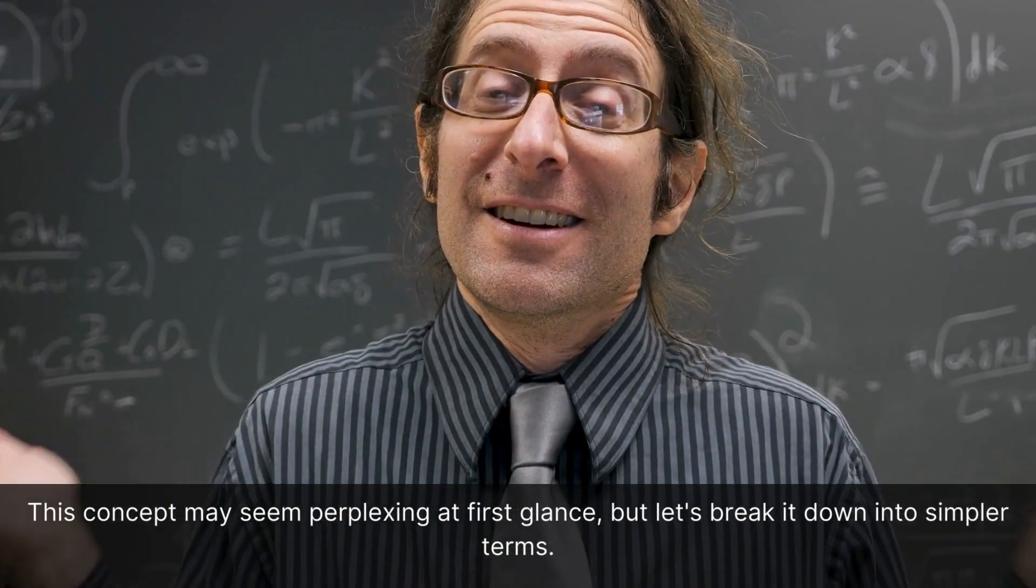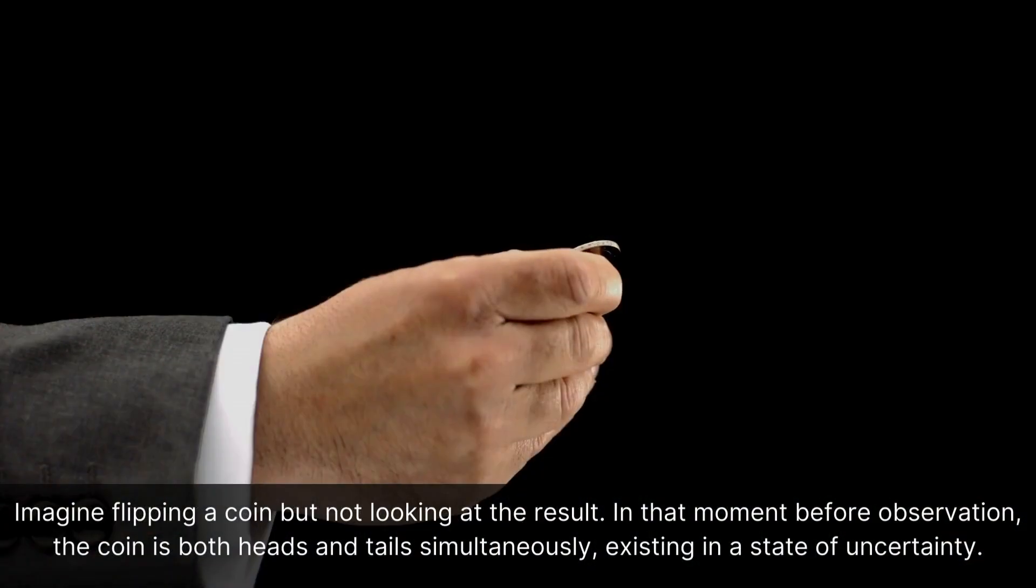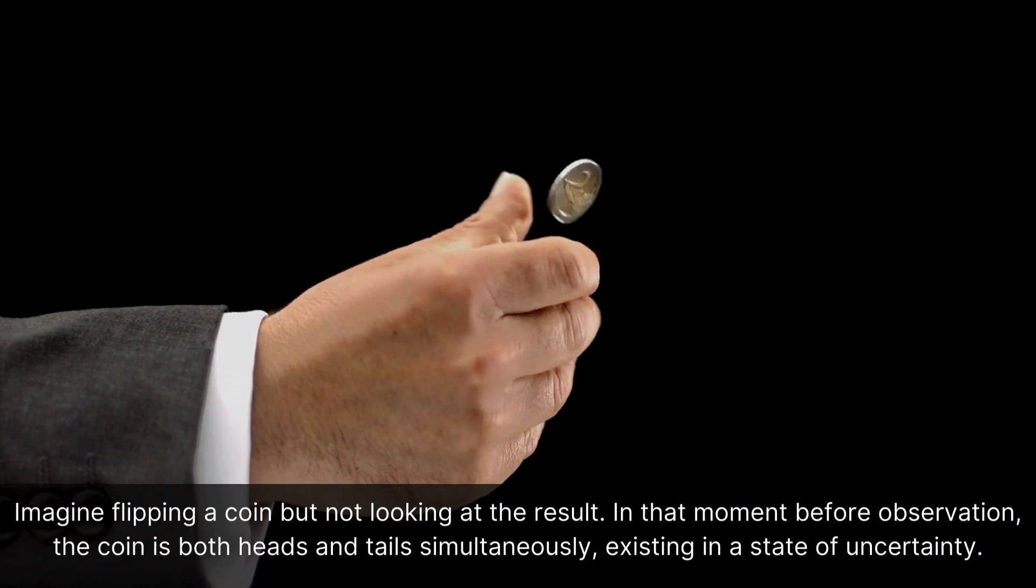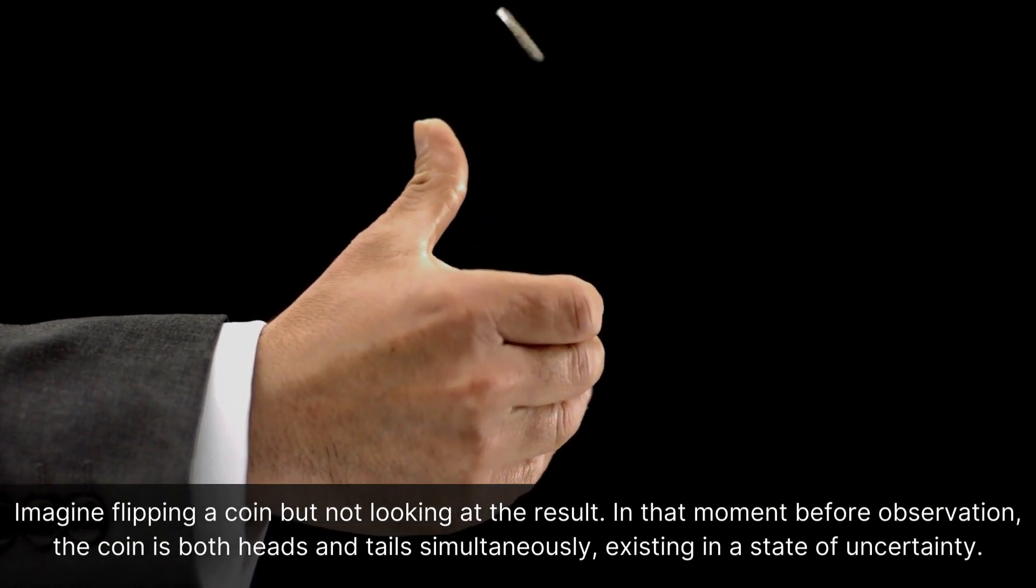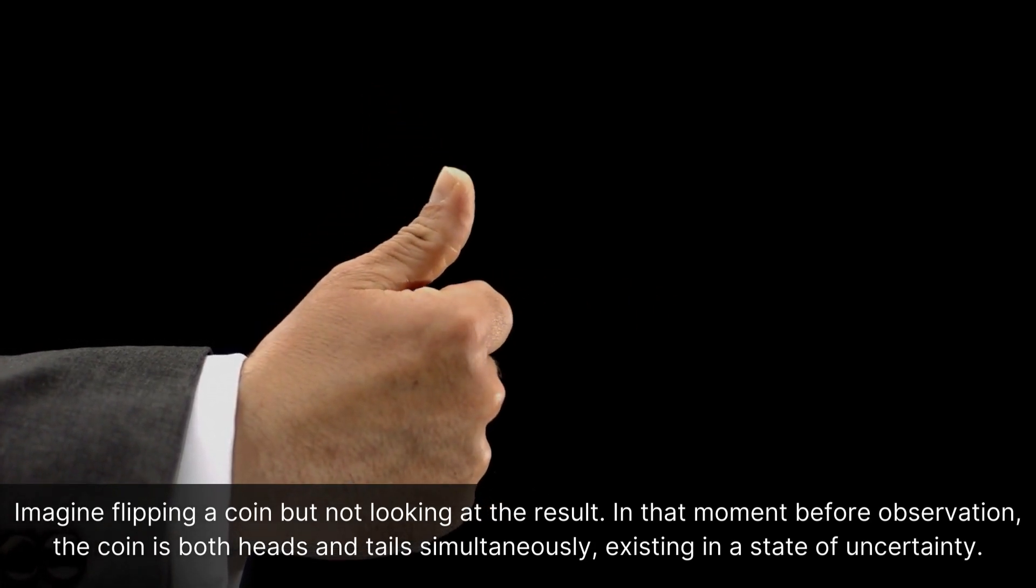This concept may seem perplexing at first glance, but let's break it down into simpler terms. Imagine flipping a coin but not looking at the result. In that moment before observation, the coin is both heads and tails simultaneously, existing in a state of uncertainty.